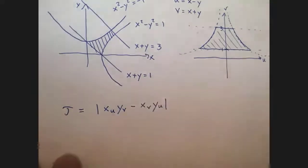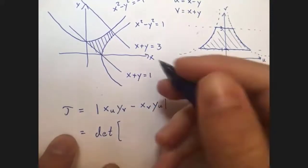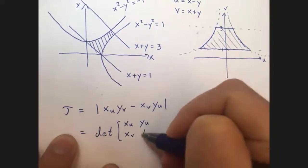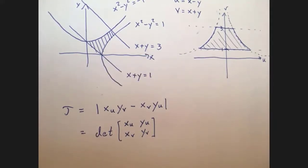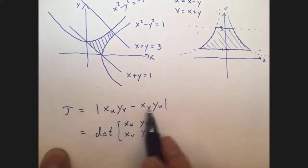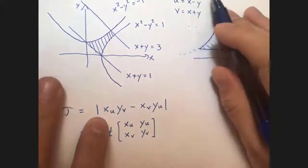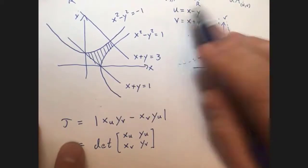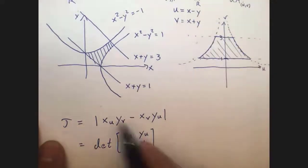That expression is actually the determinant of the matrix with entries x_u, y_u, x_v, y_v. You can think of it as a determinant or just remember the formula. To compute these partial derivatives, I need x written in terms of u and v, so I need to solve the system u equals x minus y and v equals x plus y for x and y.